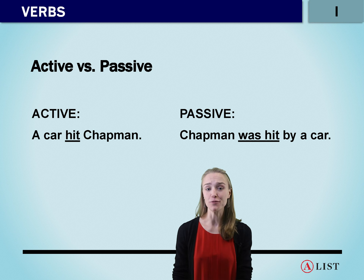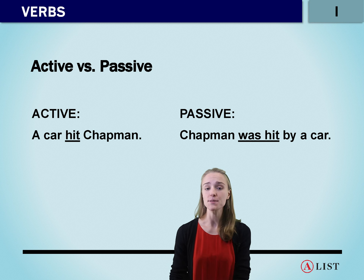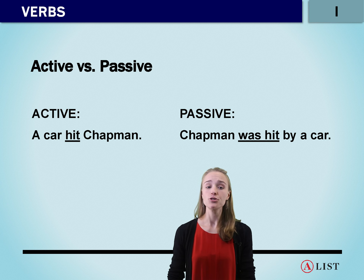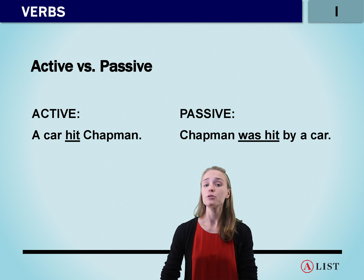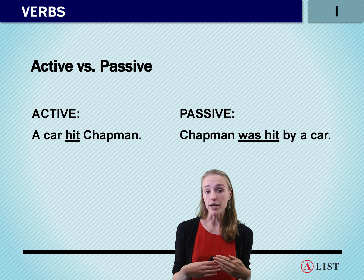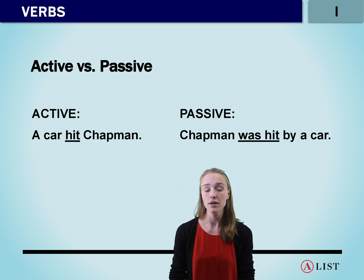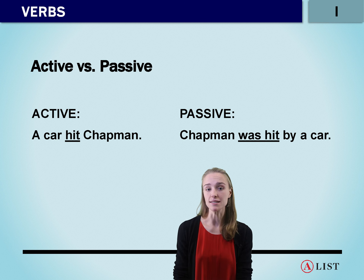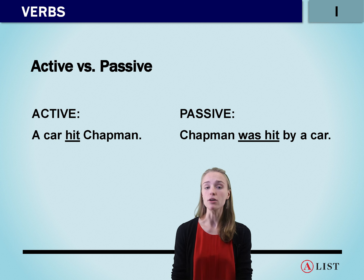The last thing to talk about with verbs is active versus passive. An active sentence is where the subject is doing the action. For example, we would say 'A car hit Chapman.' If we were using a passive construction in this sentence, the subject is receiving an action: 'Chapman was hit by a car.' The passive sentence here isn't exactly wrong, but we typically want to avoid unnecessarily passive sentences.